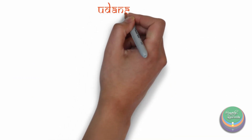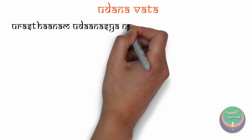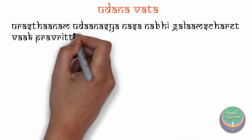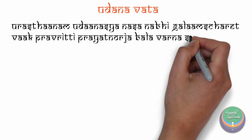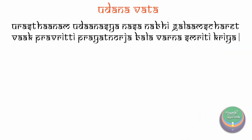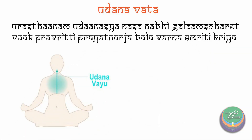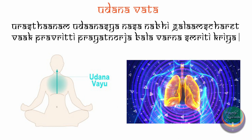Udanavata is explained as: Urasthana Mudanasya Nasanabhigalamscharet Vakpravarti Prayatna Urjha Balavarna Smriti Kriya. This is related to the act of respiration because of its site of action and also owing to the fact that it nourishes the body to perform other major functions.